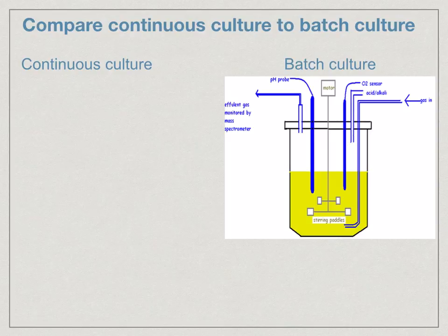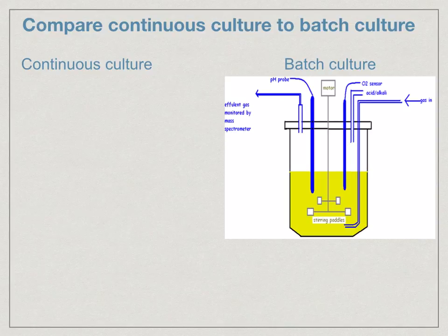The two main methods of cultivation using a fermenter are batch culture and continuous culture. Batch culture involves loading the fermenter with all the necessary materials and allowing the bacteria to grow and produce their products. Nutrients are not added, nor are the products removed during this process. Air is allowed in and waste gases are removed. The process is then stopped at a specific stage, the product is removed, and the fermenter is cleaned and sterilized ready for the next batch.